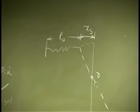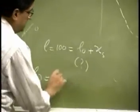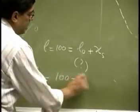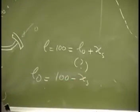So, here L0 is going to be 100 minus whatever is the actual elongation in that particular spring.